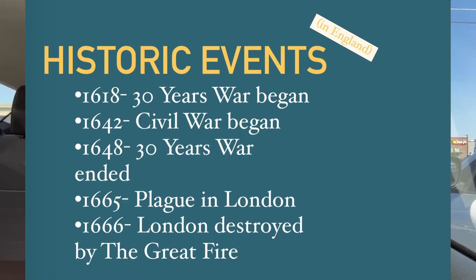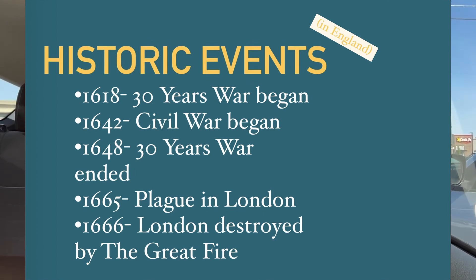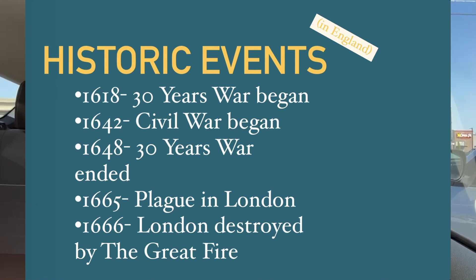Some historic events that occurred during John Wallace's lifetime were the Thirty Years War, which began in 1618 and ended in 1648. The Civil War began in 1642, which took place in England and Wales between the Royalists and Parliamentarians. In 1665, the plague began in London, and then in 1666, the city of London was destroyed by the Great Fire.